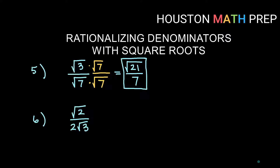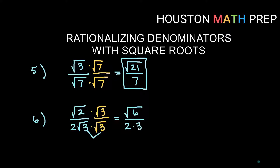For number six, I have root two over two times root three. To keep everything as small as possible, I'm just going to multiply by the root on the bottom, which is square root three — multiply by root three up top as well. Root two times root three gives us root six on top. On the bottom, two is an outside number; root three times root three gives us three, so we have two times three equals six. The answer is root six over six.